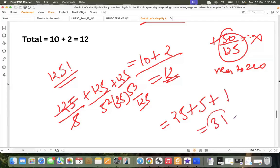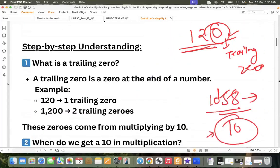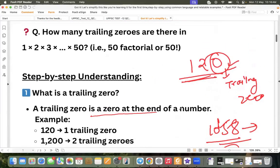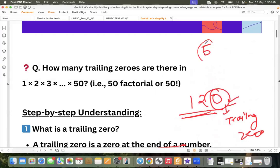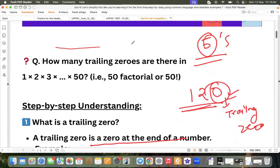So that trailing 0 would be 31. I hope you understood the concept. So trailing 0 is 0 at the end of a number, and trailing 0 find karne ke liye we need to find the number of fives. So the one way is you are calculating manually the number of five.